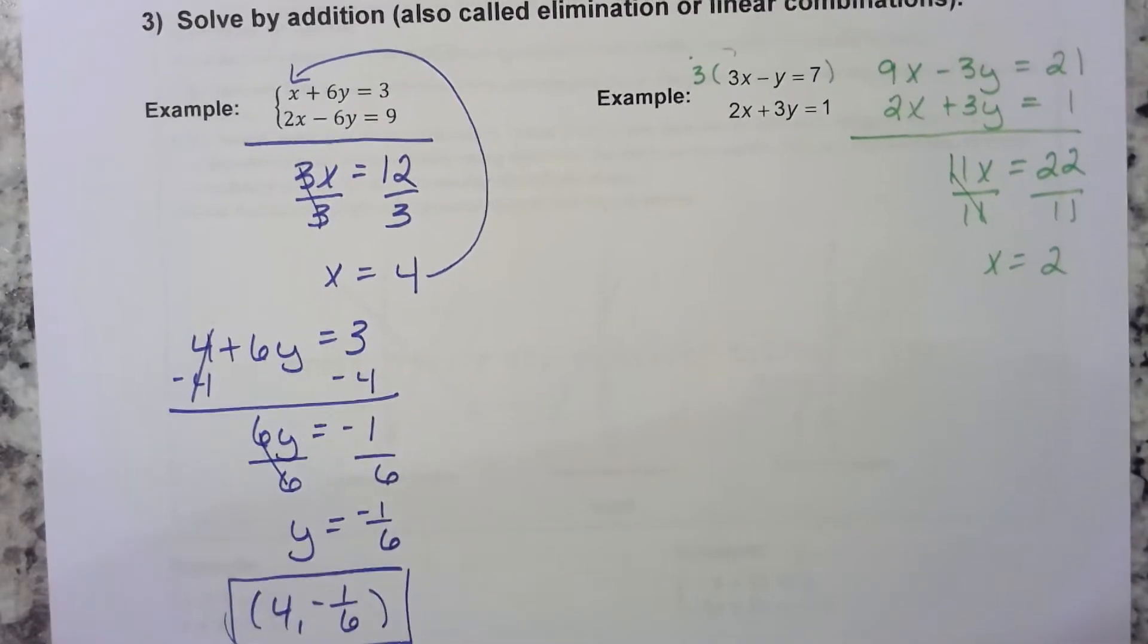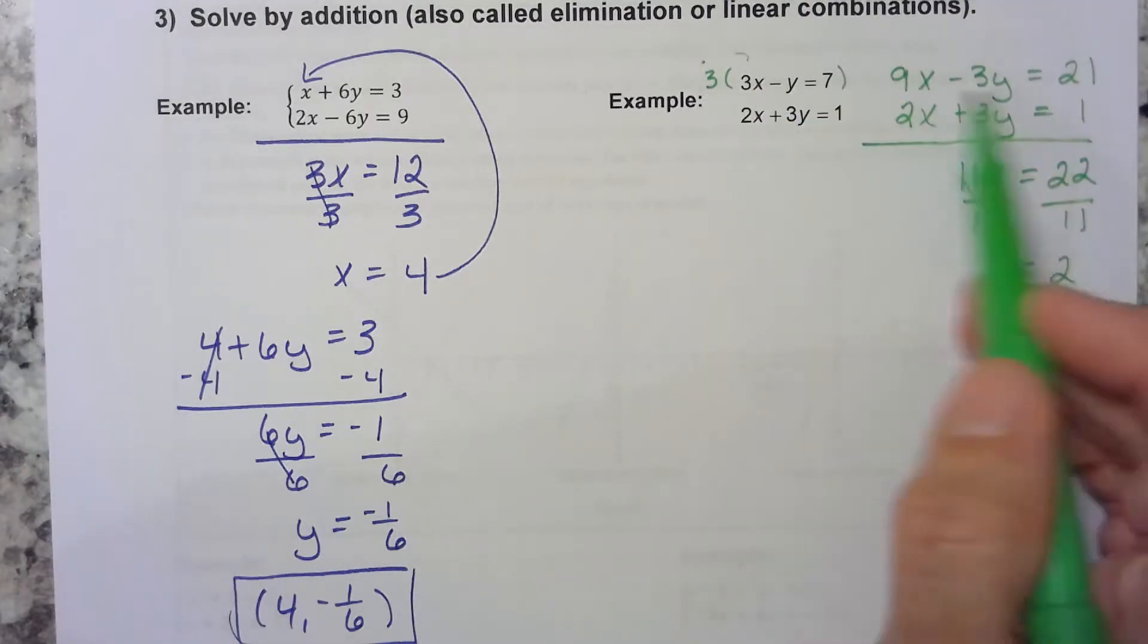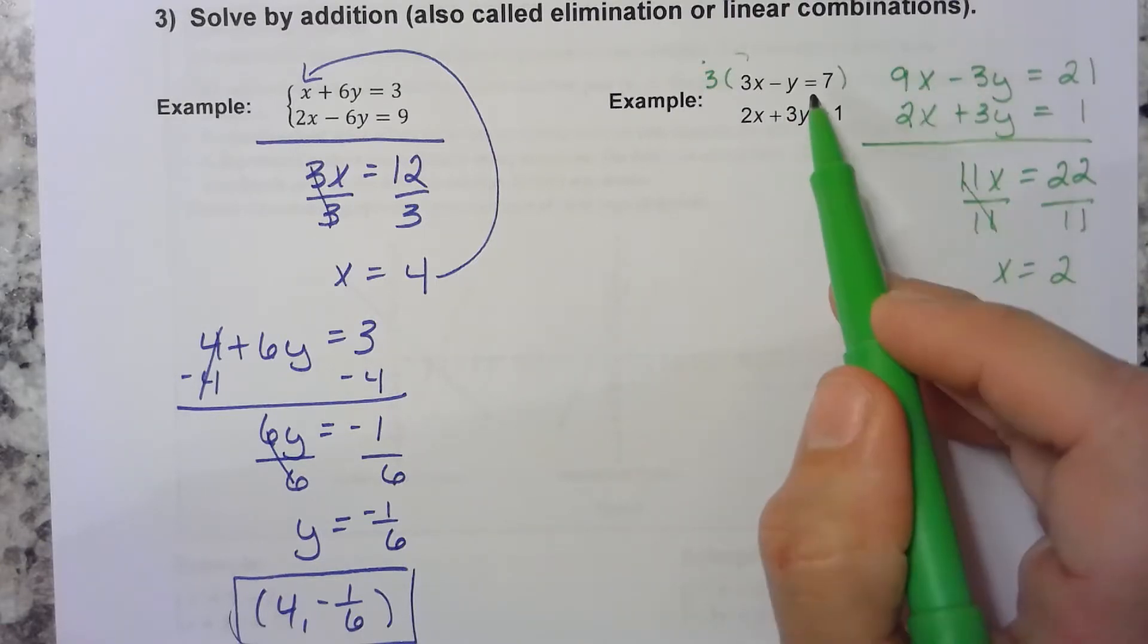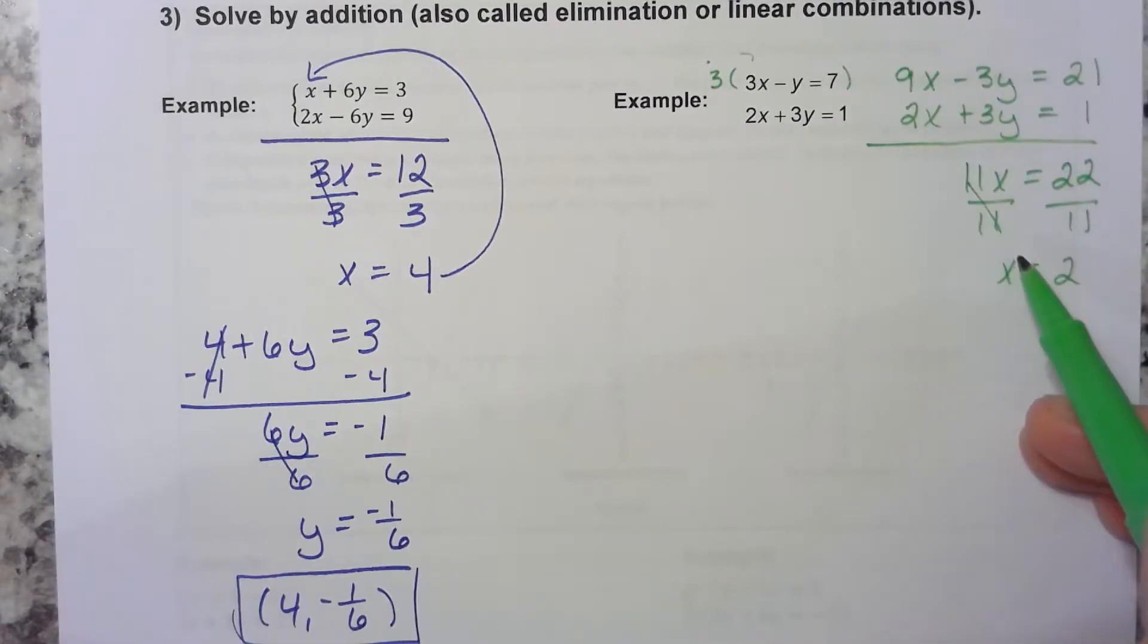So all we did was multiply an equation by some number. As long as you do it to both sides, it's still okay to do that because you haven't changed it at all. You just made the numbers bigger. But those mean the same equation. Okay? So we haven't really changed it. We just put it in a form that helps us solve the system.